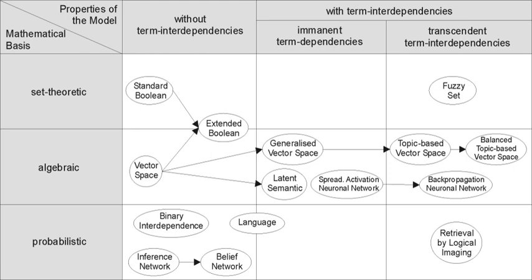Probabilistic models treat the process of document retrieval as a probabilistic inference. Similarities are computed as probabilities that a document is relevant for a given query. Probabilistic theorems like Bayes' theorem are often used in these models. Examples include the Binary Independence Model, Probabilistic Relevance Model (on which the Okapi relevance function is based), Uncertain Inference, Language Models, Divergence from Randomness Model, and Latent Dirichlet Allocation.